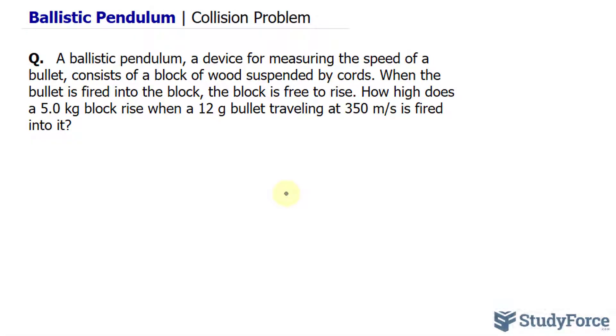Let's begin with an illustration. Here is my ballistic pendulum, and this is the block of wood. The bullet, which I'll represent in orange, has a constant velocity, which I'll represent by the lowercase letter v. And it has a mass of 12 grams, which I'll represent in kilograms just so that we're consistent, 0.012 kilograms.